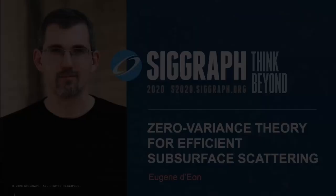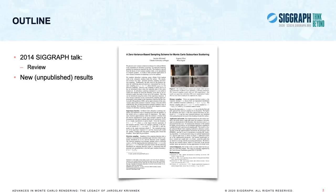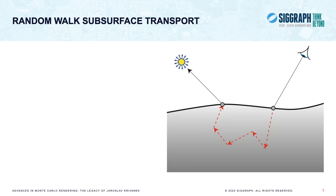Welcome to the next part of the course on zero variance theory. We'll cover some work that began when Jaroslav visited Weta Digital in 2013. We'll review work published in the SIGGRAPH 2014 talk, as well as several results that Jaroslav and I never managed to publish until now. We set out to improve the efficiency of random walk subsurface transport in the context of a unidirectional path tracing algorithm, where a random walk from the camera to the light source is generated.